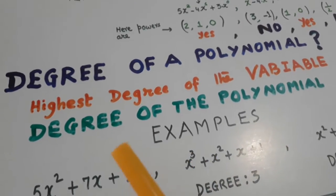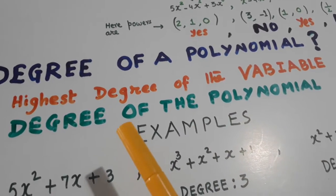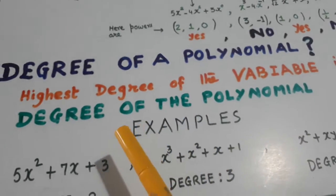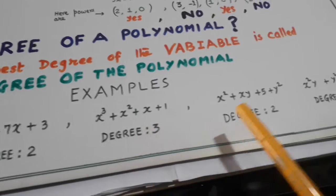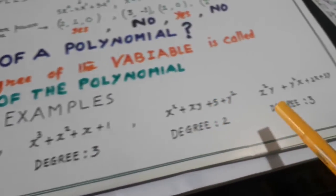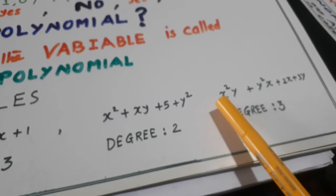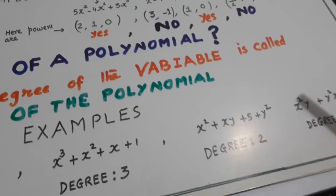What is degree of a polynomial? The highest power of the variable is called degree of the polynomial. Yahan pe degree kitni hai - 2, 3, 2, 3. Now, let us go further.